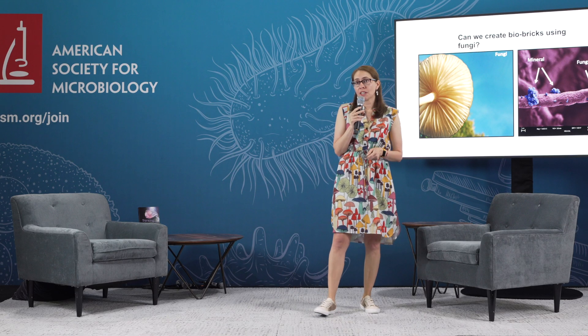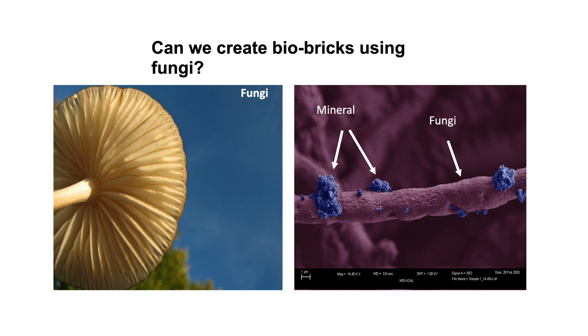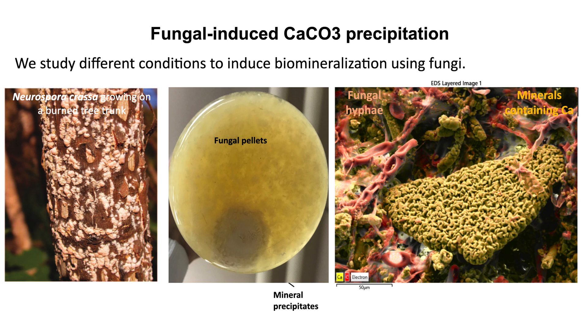A lot of research on biocementation by ureolytic microbes has been done using bacteria. But in the last decade, filamentous fungi have emerged as ideal candidates for these applications. Fungi have the ability to survive in very harsh conditions, which could be relevant for cement environments. They also produce a whole lot more biomass compared to bacteria, potentially providing more nucleation sites for minerals to precipitate. They can also form very long, complicated networks with their hyphae — the filament or fiber-like structures of fungi — which could potentially also strengthen our materials. And of course, fungi have shown the ability to produce urease and induce calcium carbonate precipitation.